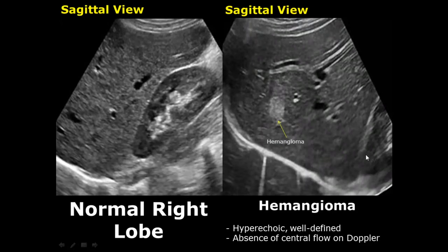Here is a sagittal view of the liver showing a hemangioma right here. When we apply Doppler, it will not have any central flow.